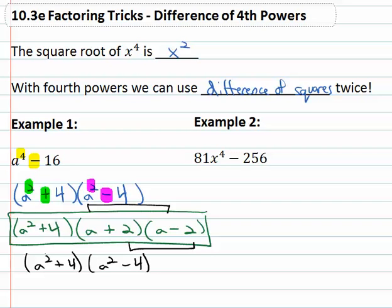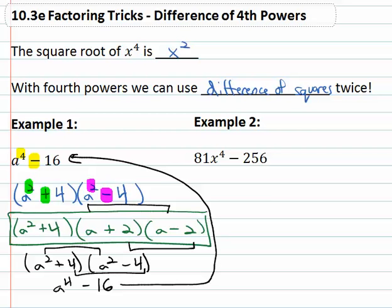And then we still have a squared plus four. Again, that's a sum and difference, so we only do the first, that's a to the fourth. And the last, that's minus sixteen. And that gives us the original problem. So we know our answer is correct.